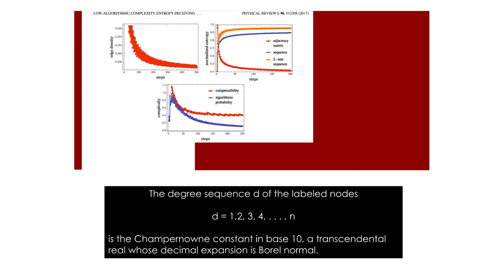Indeed, the degree sequence of the graph is the Champernone constant in base 10 that we already saw in a previous unit. This is a transcendental real whose decimal expansion is Borel normal and thus of maximal entropy because it has no repetitions. Indeed, because core node 1 has one link and core node 2 has two links and so on, the degree sequence of this graph is near maximal entropy except for a small number of supportive nodes. Notice that one can also reconstruct exactly the same graph from its degree sequence as we have also proven in our previous work.